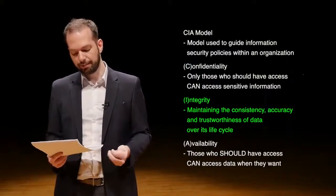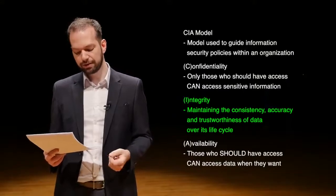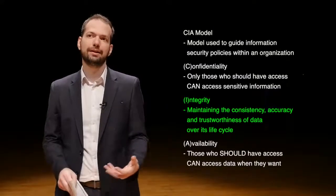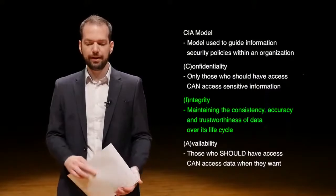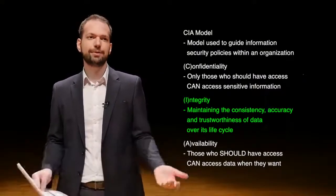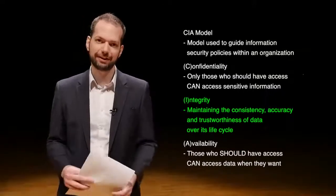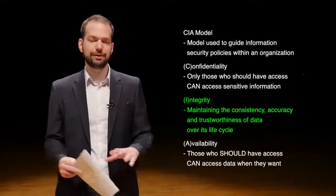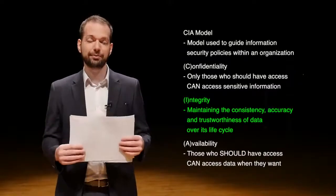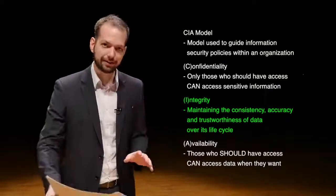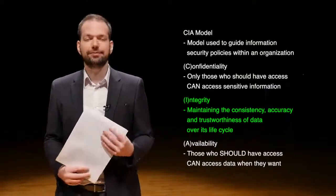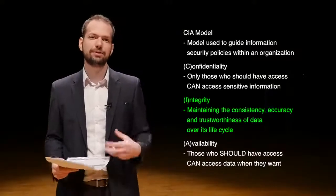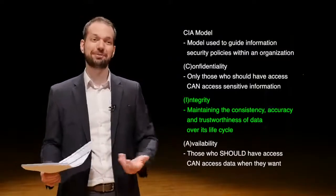Next is Integrity in the CIA model — maintaining the consistency, accuracy, and trustworthiness of data over its life cycle. How do we know the data has not been modified or tampered with? For example, your bank account — how do you know somebody hasn't gone in and illegally modified the amount of money in your account? Or if you send an email, how do you know somebody didn't intercept it mid-transfer, change something, and then send it on? We have more or less some ways to check the integrity of data we're sending to make sure it's not modified when it shouldn't be.